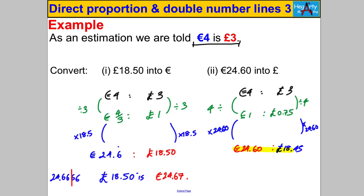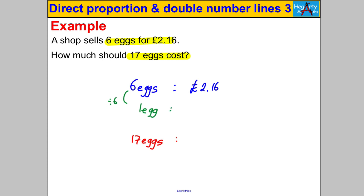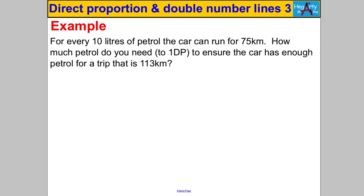Pause and have a go. A shop sells 6 eggs for £2.16 — how much do 17 eggs cost, assuming price and number of eggs are directly proportional? Write 6 eggs to £2.16. Divide both sides by 6 to get the unit rate: one egg = 36p. Then multiply both sides by 17: 17 eggs cost £6.12.